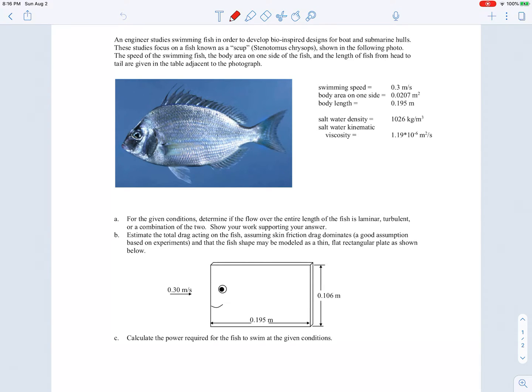In this example we have a fish and we're asked to determine if the flow over the fish is laminar, turbulent, or a combination of the two. That's part A. Part B is to calculate the total drag acting on the fish assuming skin friction drag dominates. We're going to model the fish shape as being a thin flat rectangular plate. You can see our picture of our rectangular fish, obviously an approximation.